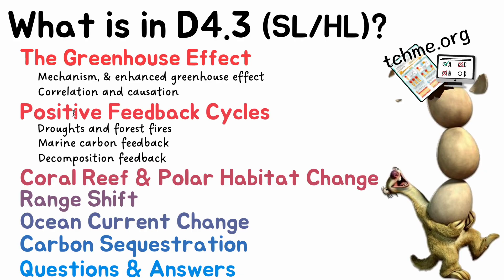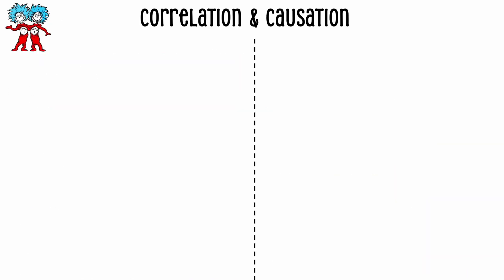Right before we go into the positive feedback cycles related to the greenhouse effect, we're going to talk about something very important that the IB wants you to know: correlation and causation. I have an interesting example to help illustrate this.